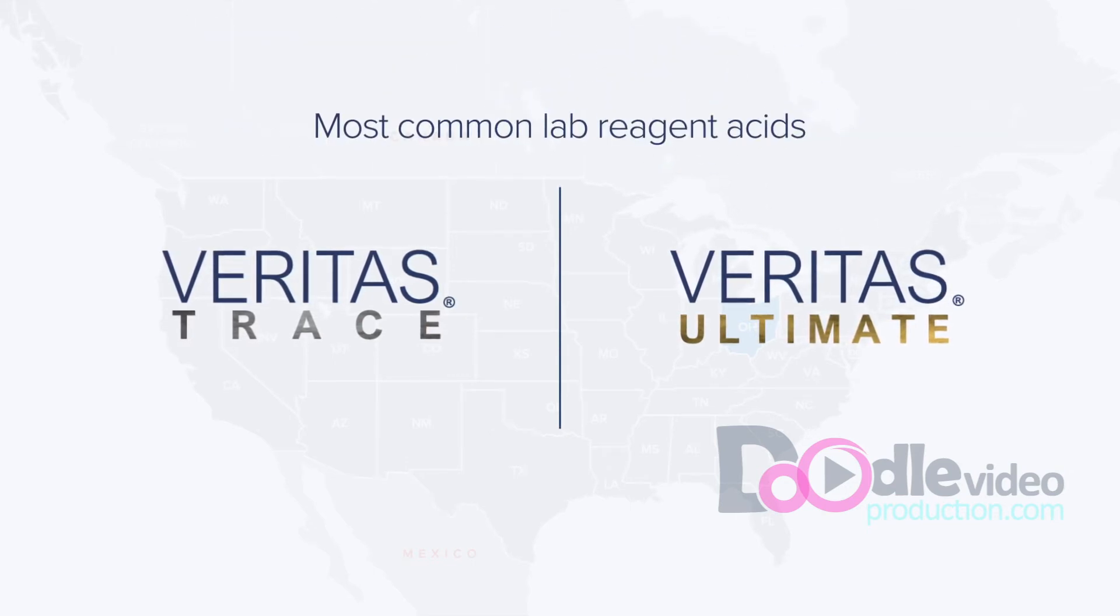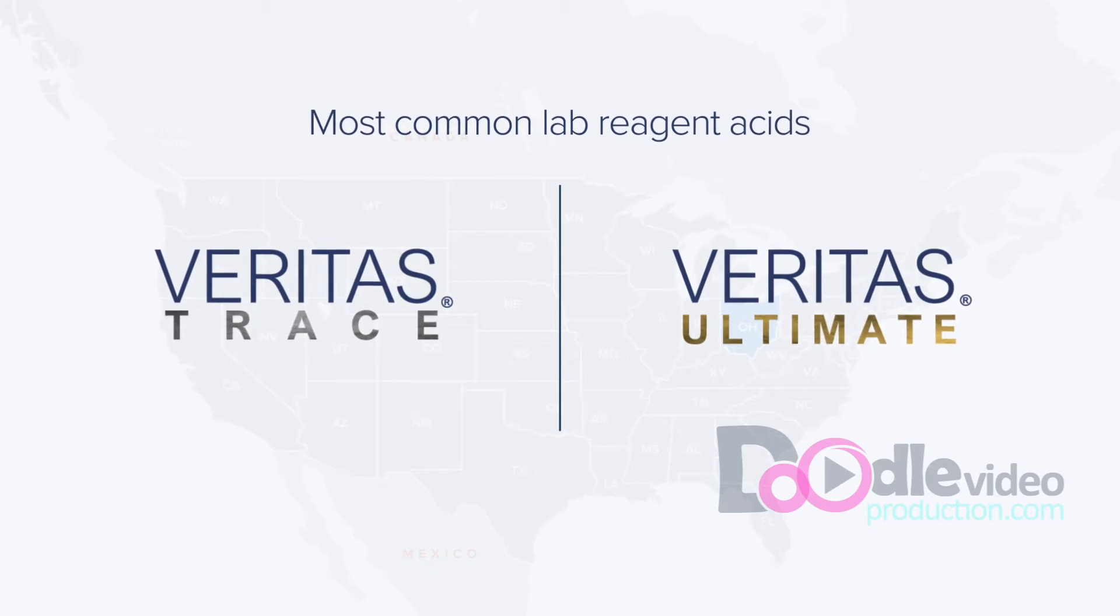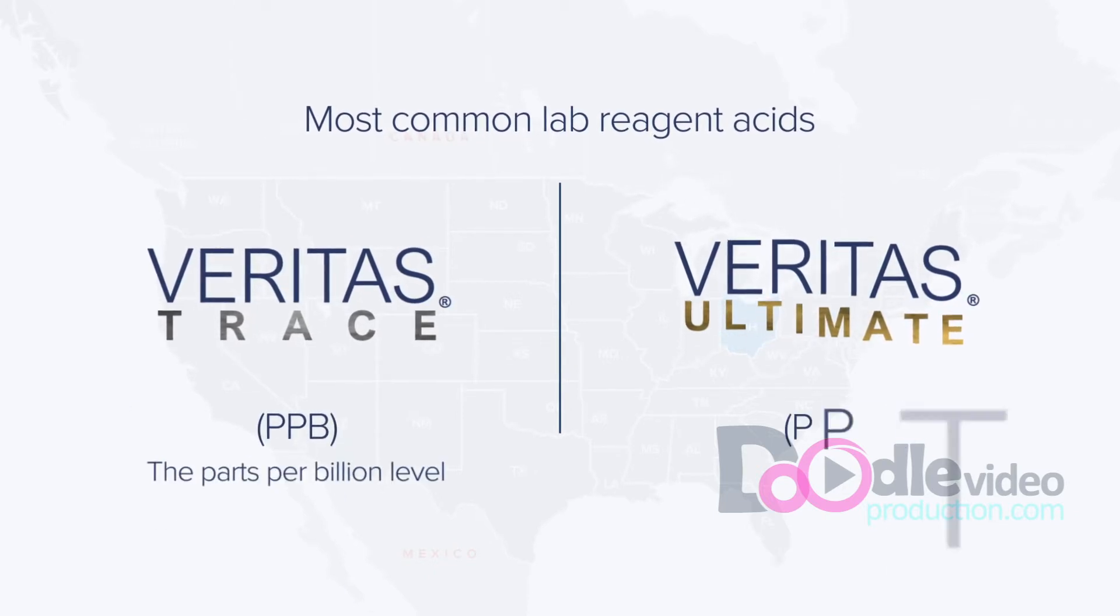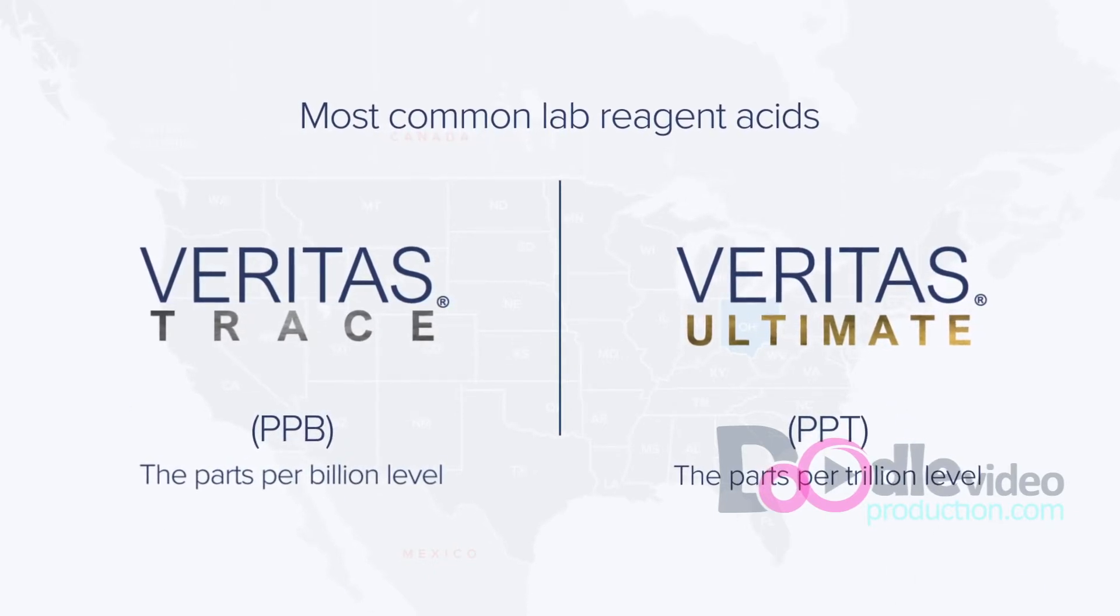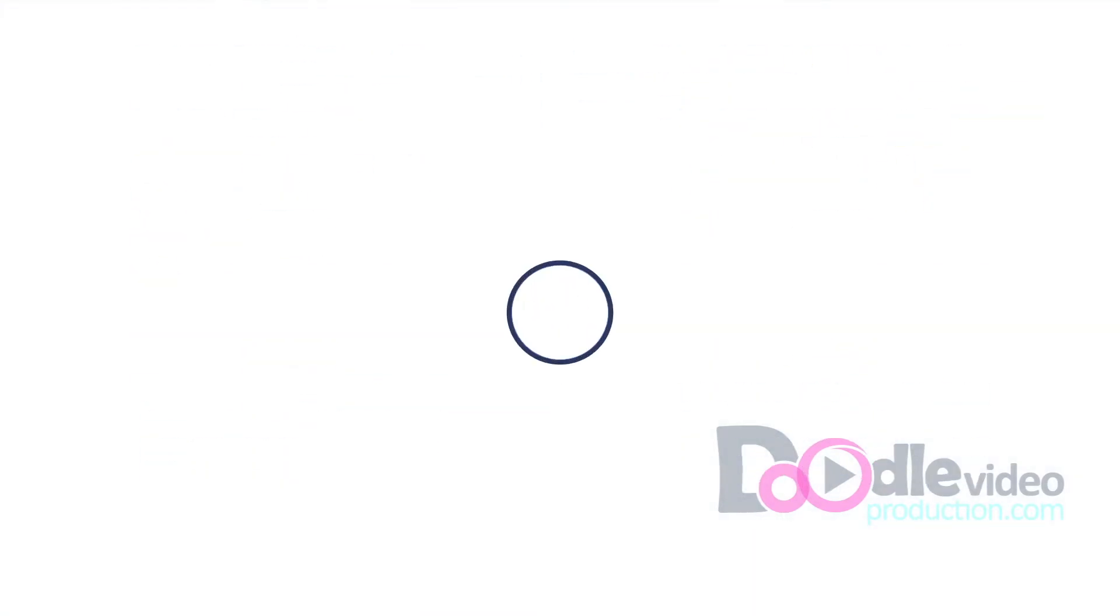While most common lab reagent acids measure as low as the parts-per-million level, Veritas Trace and Veritas Ultimate contain impurities in the parts-per-trillion level. Let us quantify that.